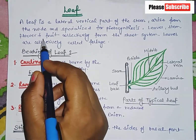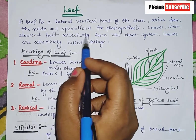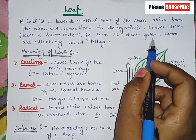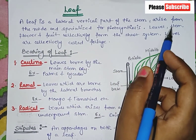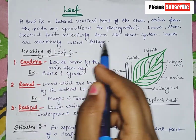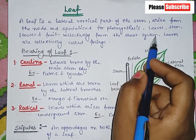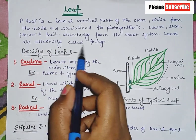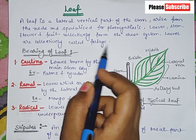Leaf, stem, flower, and fruit collectively form the shoot system. Leaves are collectively called foliage.